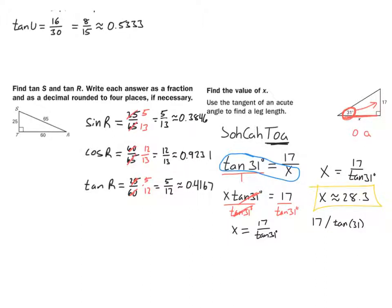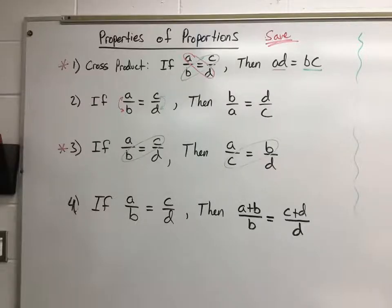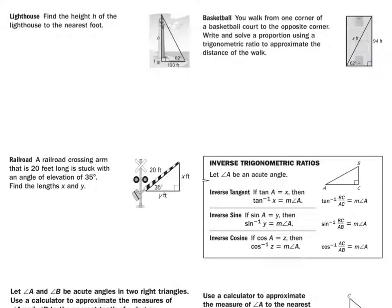Alright, so second day of 8.3, we want to continue solving for missing side lengths in triangles, in right triangles, using trigonometry. So if we go to the back side of your 8.3 notes, here we are on the back side of our 8.3 notes.